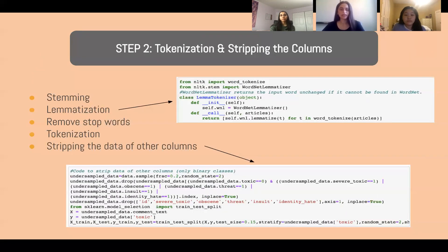And step two is tokenization and stripping the columns. So we did stemming and lemmatization, which is finding the roots of words. We removed stop words to just focus on the main words of our data. We did tokenization, which is dividing our phrases and comments into individual words. And we stripped the data of other columns. So our data set had multiple categories, one of them which was toxic. And so our project was just focusing on measuring the toxicity of the comments.